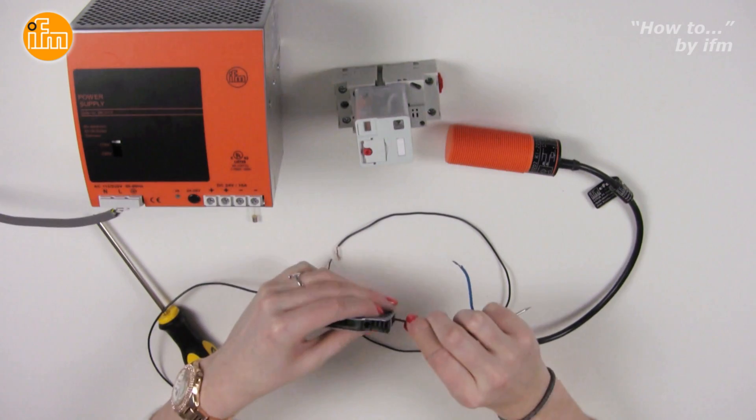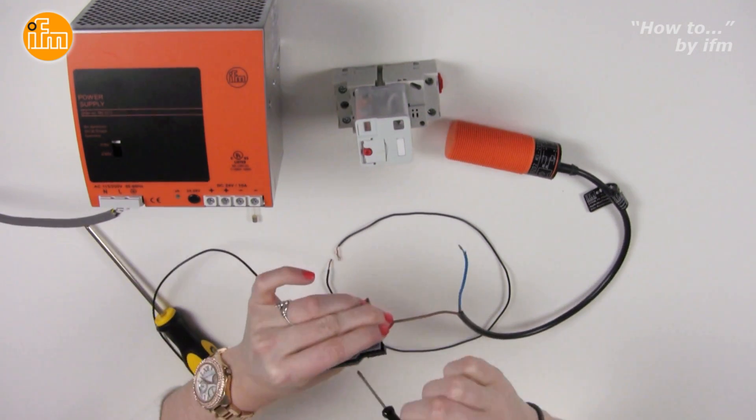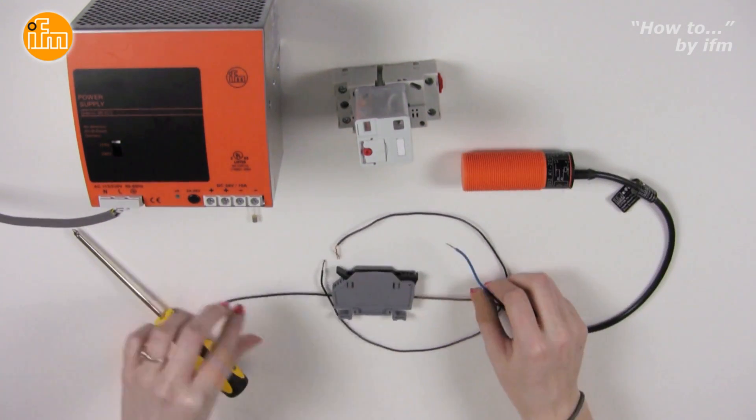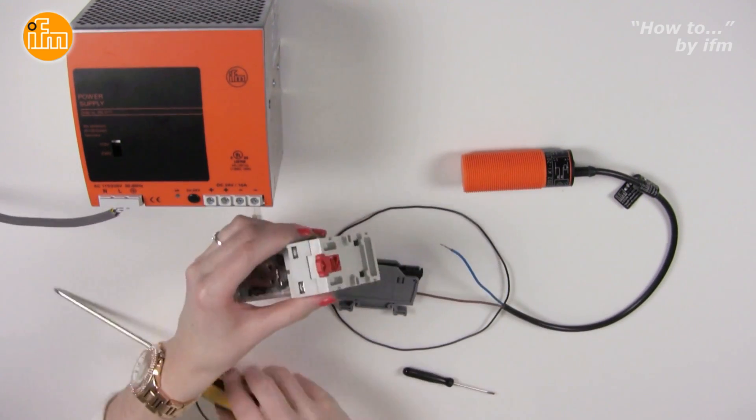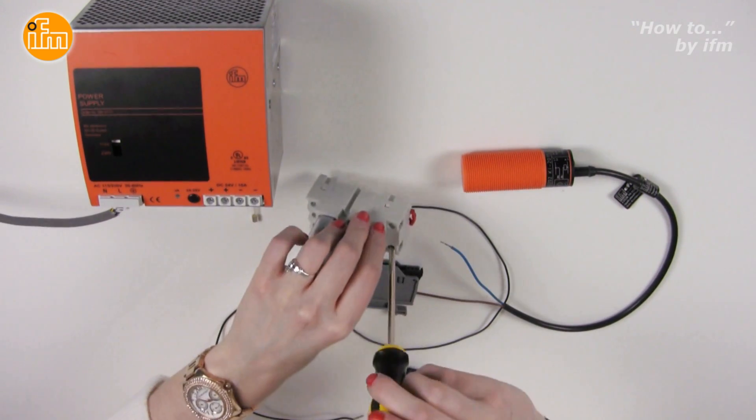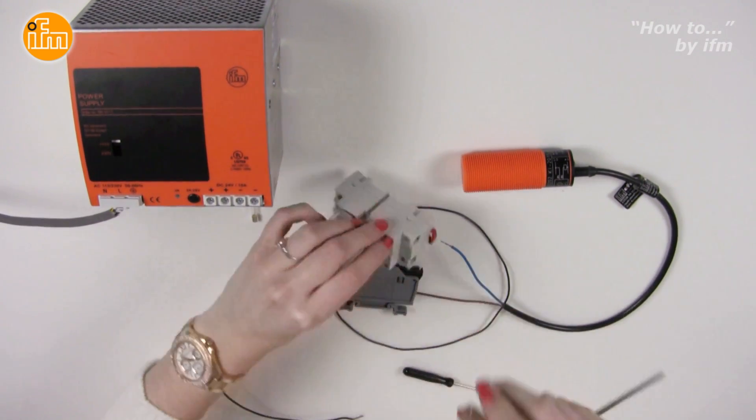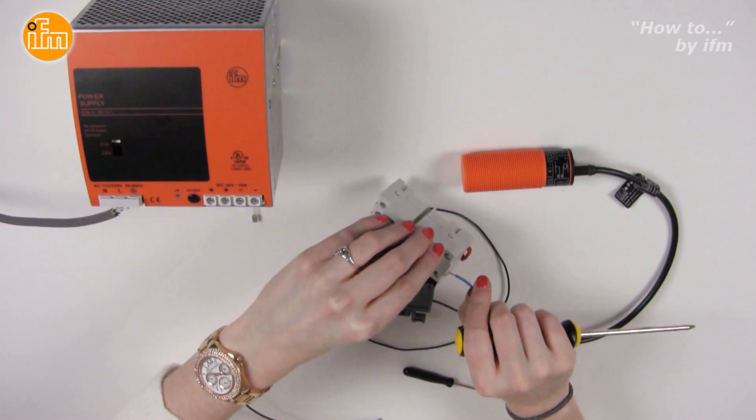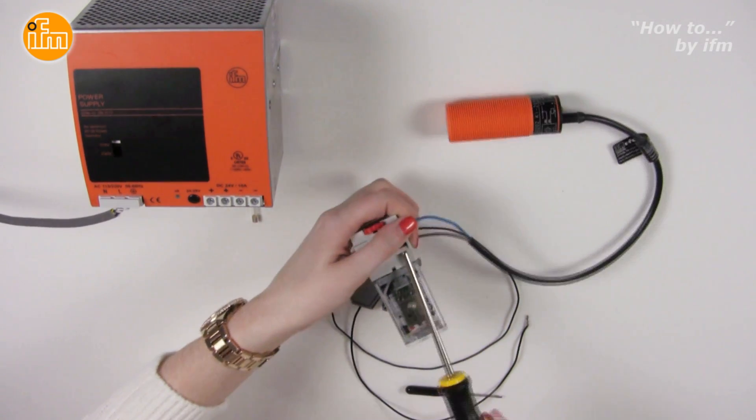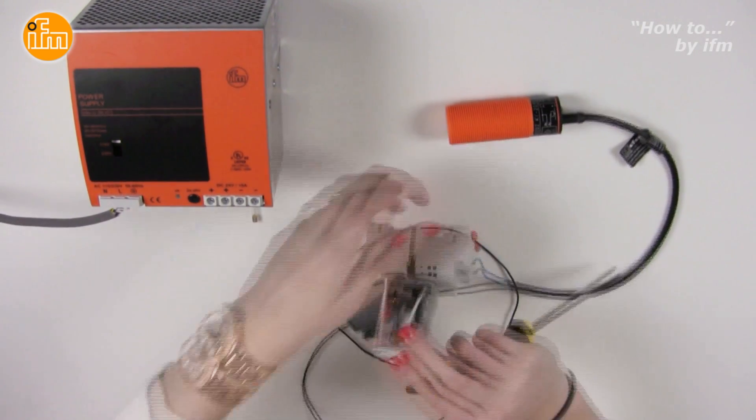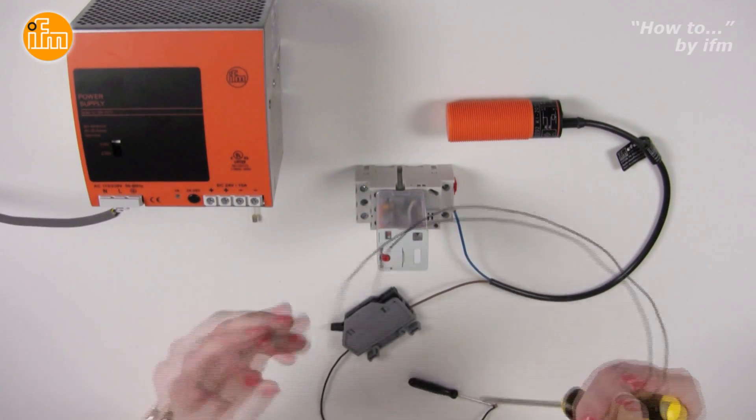Next, the blue wire of the sensor is connected to the coil side of the relay, and another wire is connected to the adjacent terminal of the relay.